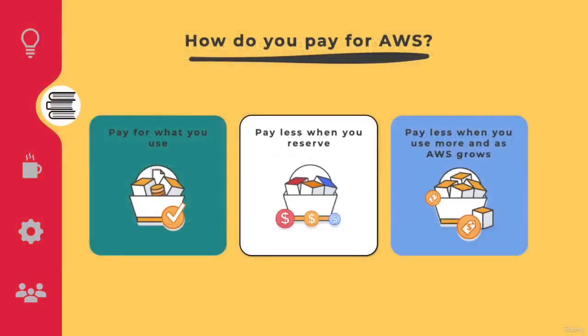How do you pay for AWS? You pay for what you use. If you create one EC2 instance, you are charged per hour for Windows or per second for Linux. However, if you reserve that EC2 instance on a one- or three-year contract, you can get up to 75% off the on-demand price, and you can decide whether to pay all upfront, partial upfront, or no upfront at all.